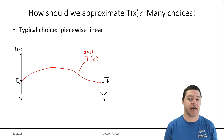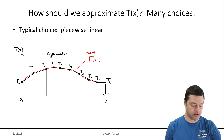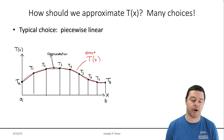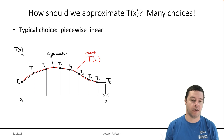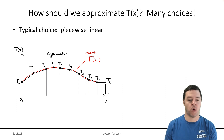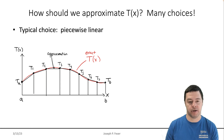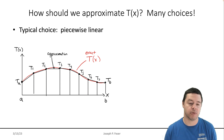If the exact solution for the temperature profile is some continuous one-dimensional curve, typically what we'll try to do is represent it as a piecewise linear polynomial. What that means is that there are a bunch of nodes where we would like to identify the actual temperature of the exact solution at those specific locations, and then interpolate in between with a linear profile. That typical choice is a piecewise linear profile.